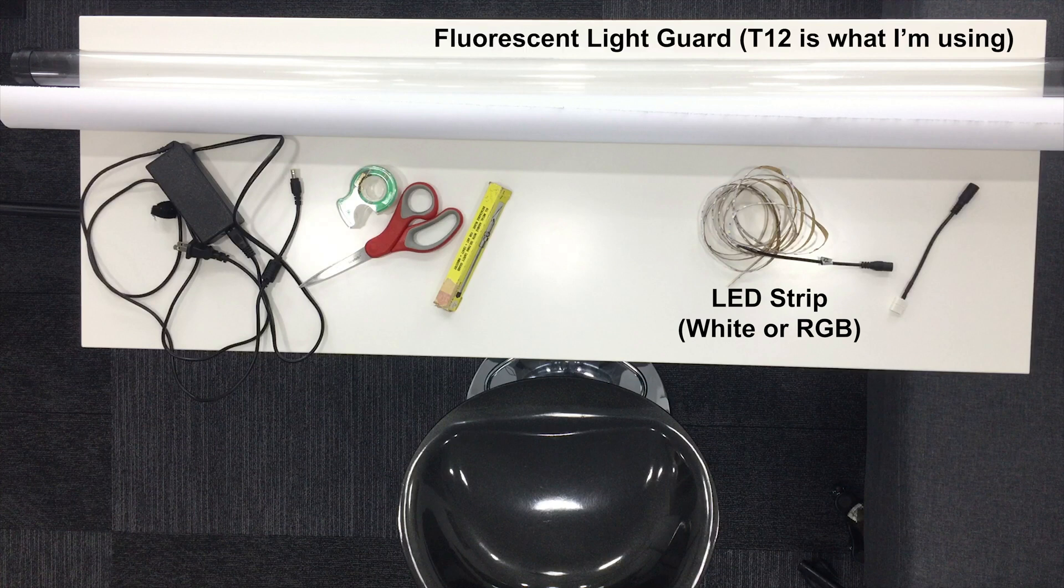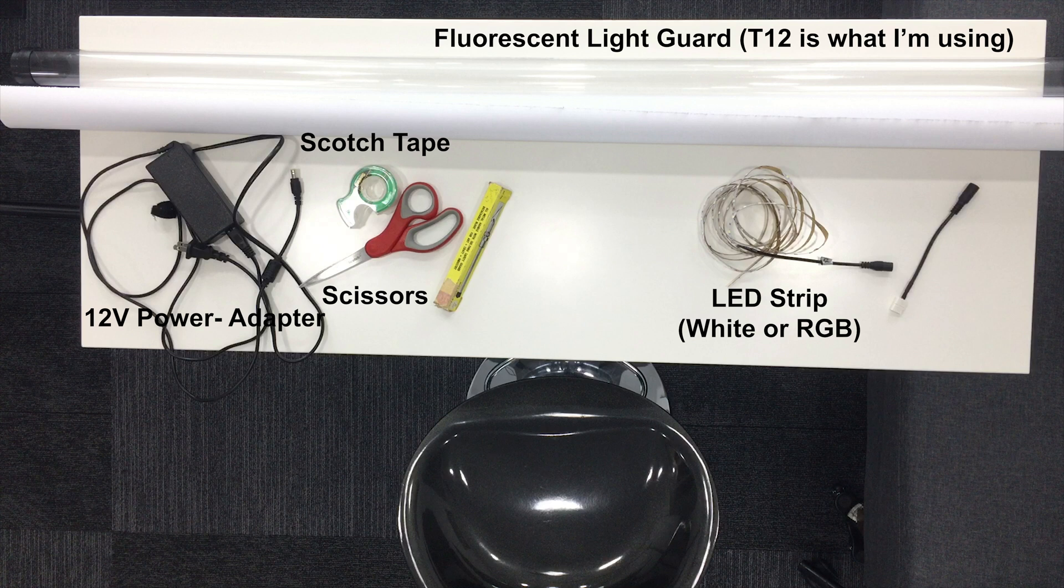So here's everything you're going to need to build one of these quasar science tubes. LEDs, fluorescent tube guard cover, power adapter, scissors, tape, some sort of paper, and an X-Acto knife.